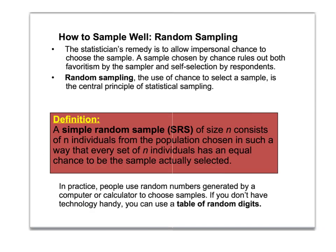One of the ways statisticians get around lurking and confounding variables is to use random sampling. Random sampling uses chance to determine how you collect your data and who goes into what group. By using chance, we hopefully balance out any confounding variables evenly between groups, so that any difference between groups can be associated with what you're studying rather than the confounding variable. The easiest and almost always recommended method is a simple random sample.